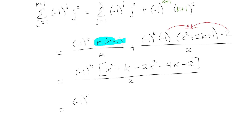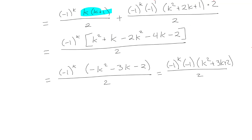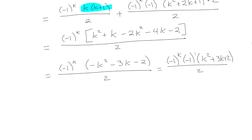Combining those terms gives me negative 1 to the k times negative k squared minus 3k minus 2, all over 2. I'll pull out that negative 1, so it becomes negative 1 to the k times negative 1 times k squared plus 3k plus 2, all over 2. Now I can combine the negative 1 to the k with the extra negative 1, giving me negative 1 to the k plus 1.